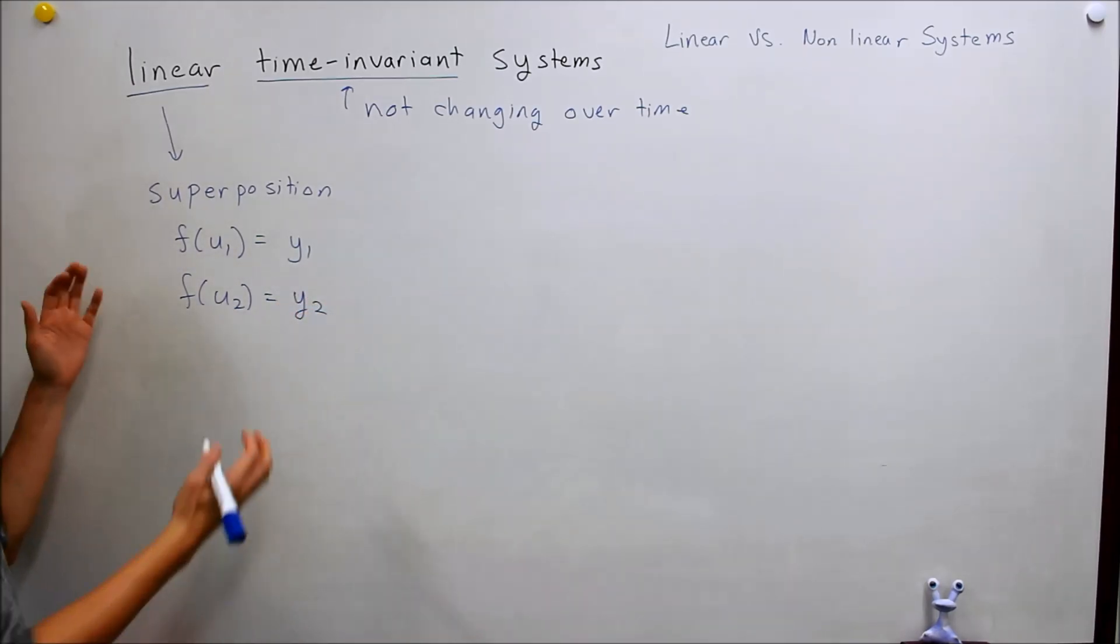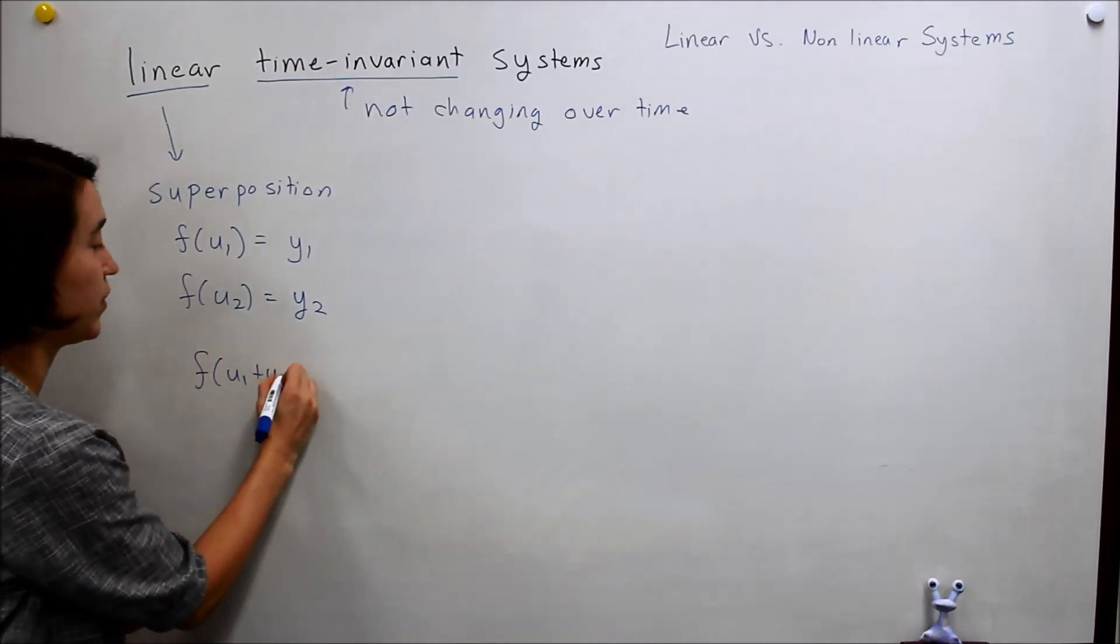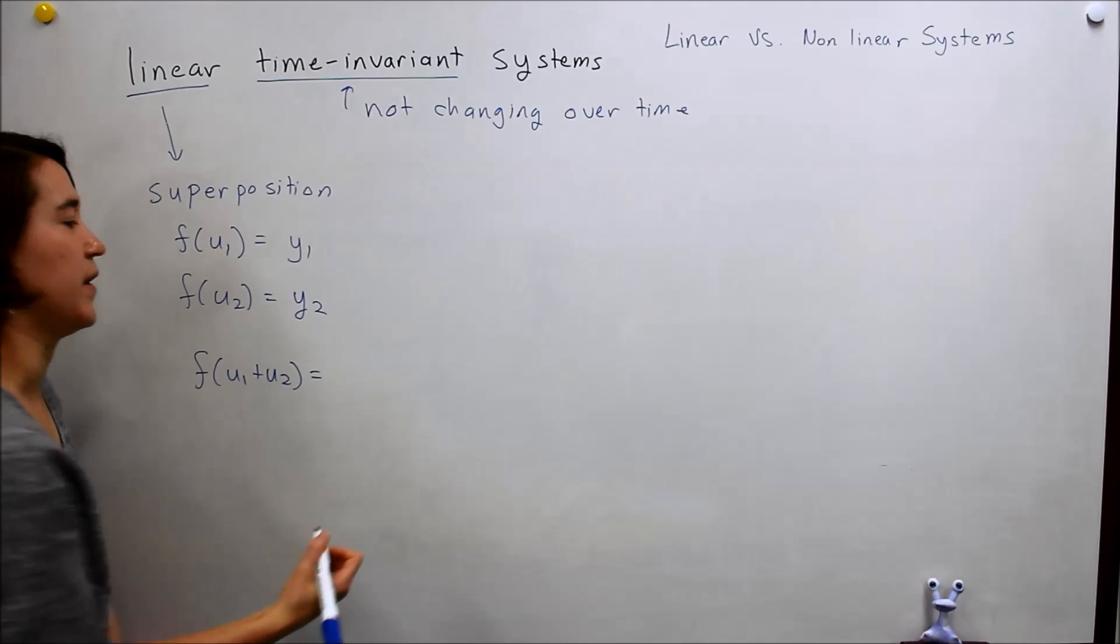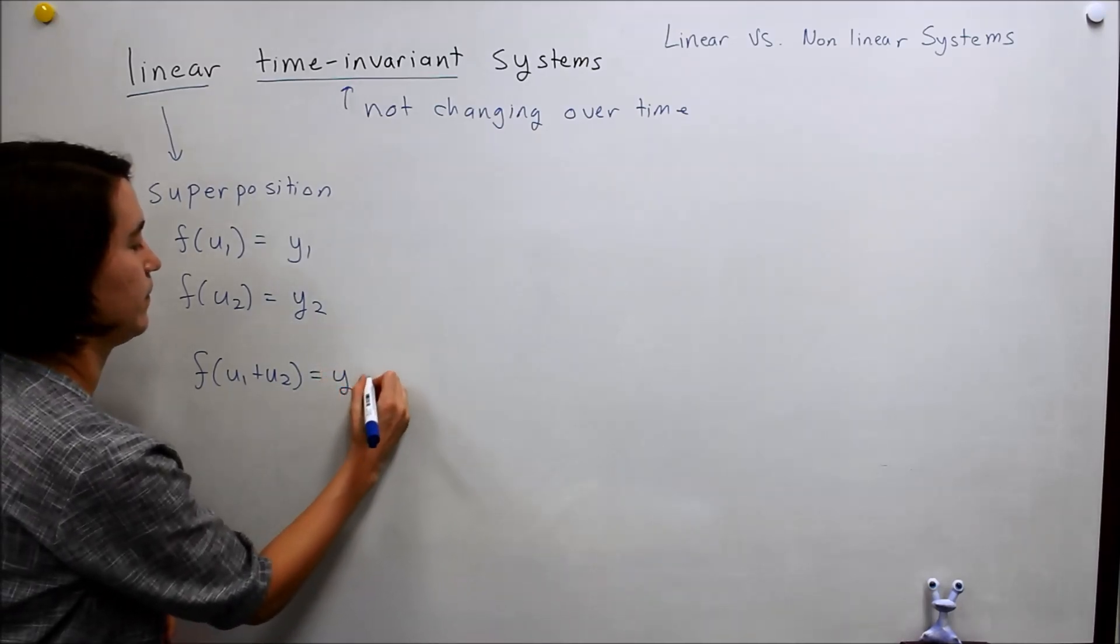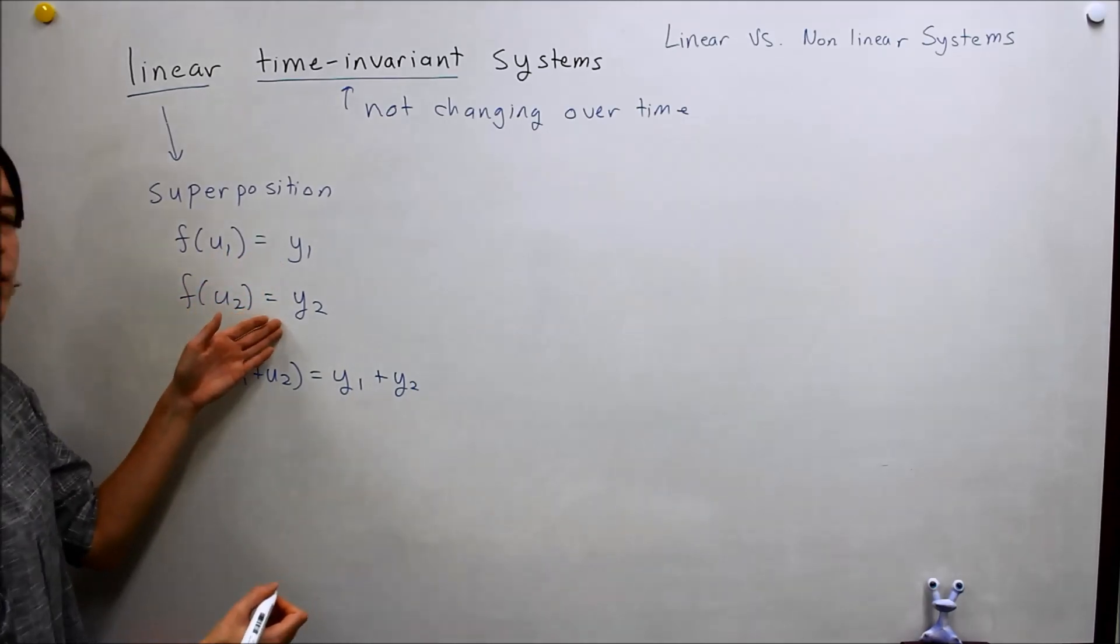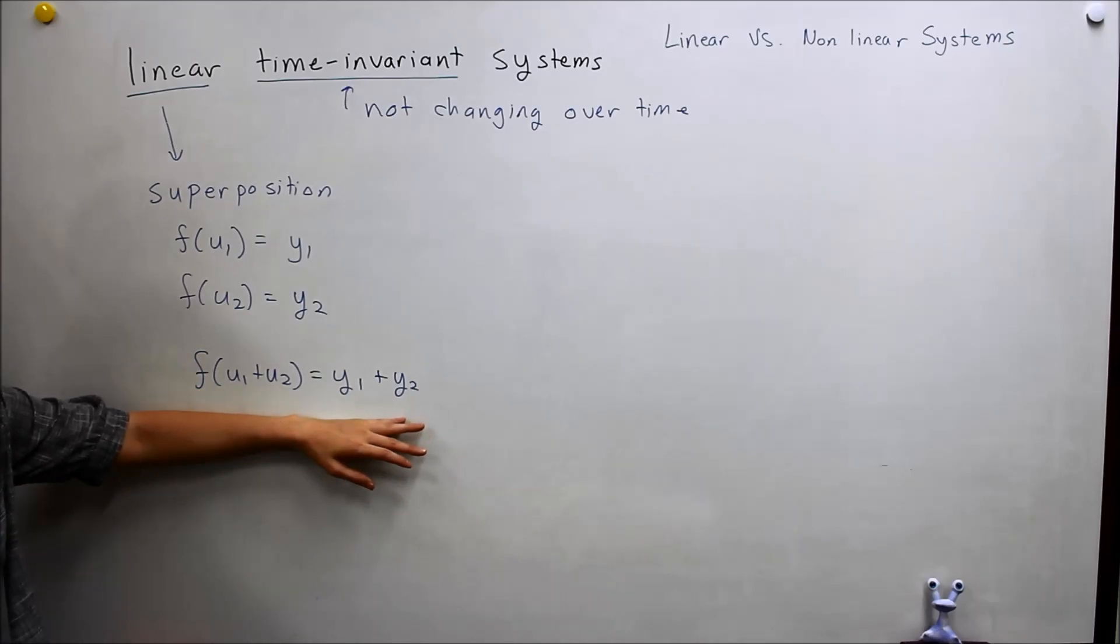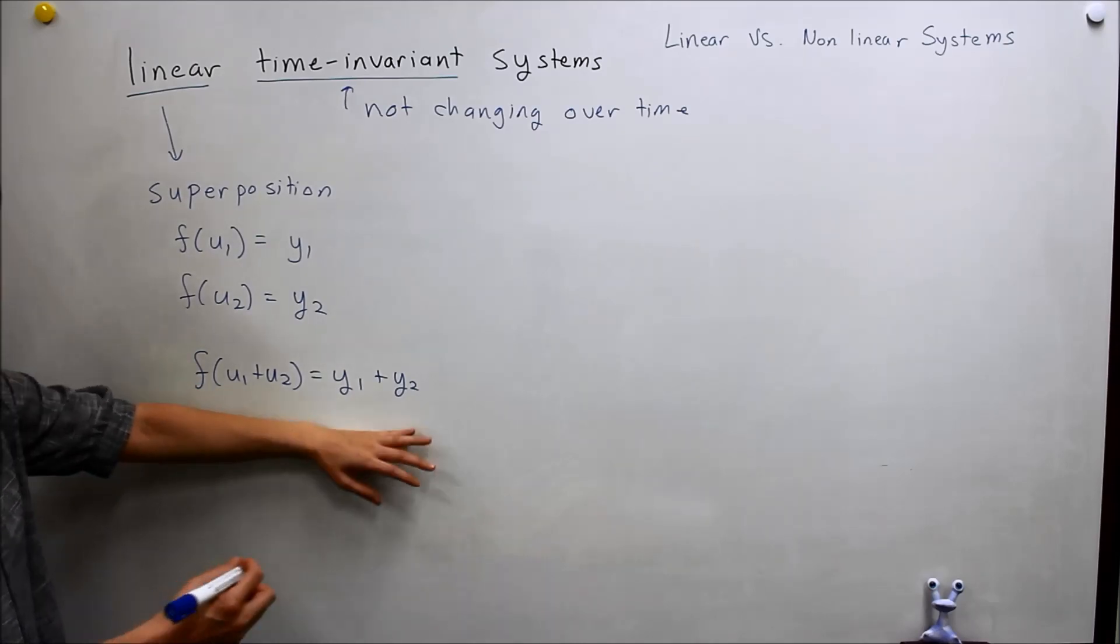Superposition just means that when you add the two inputs, so u1 plus u2, your output has to equal the output from the first input added to the second output. So, this is the basic definition for superposition.